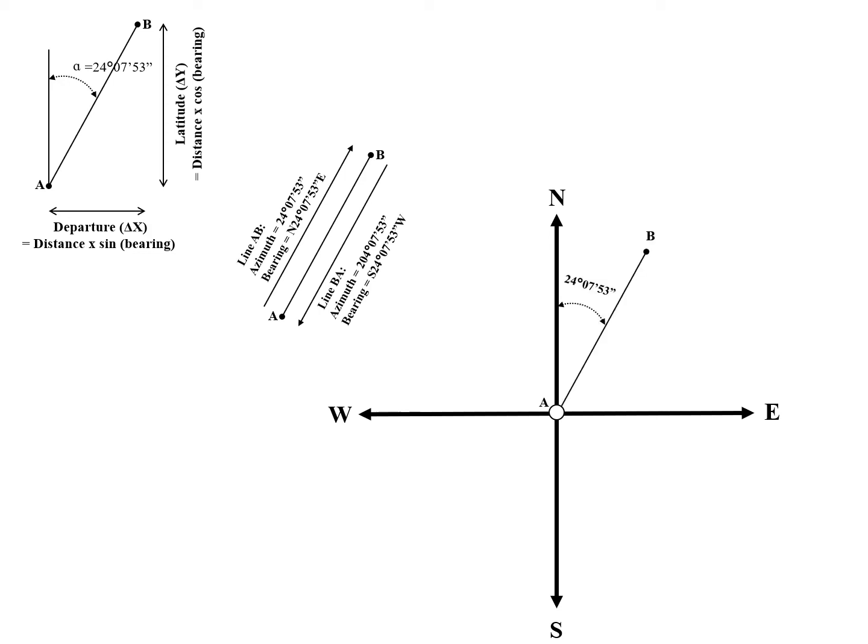So this is the one we've been using, line AB at the center point at A. So again, for that one azimuth, 24 degrees, 7 minutes, 53 seconds. The bearing of north 24 degrees, 7 minutes, 53 seconds east. And again, this is line AB. So from A to B.